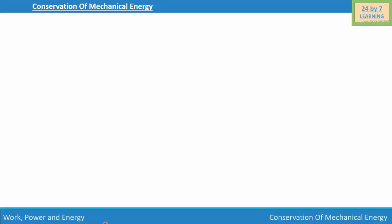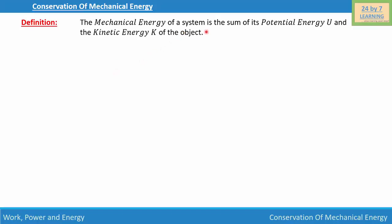In this video you are going to learn about the conservation of mechanical energy. The mechanical energy of a system is the sum of its potential energy U and the kinetic energy K of the body. We can write E = U + K, where E is the mechanical energy, U is the potential energy, and K is the kinetic energy of the body or object.